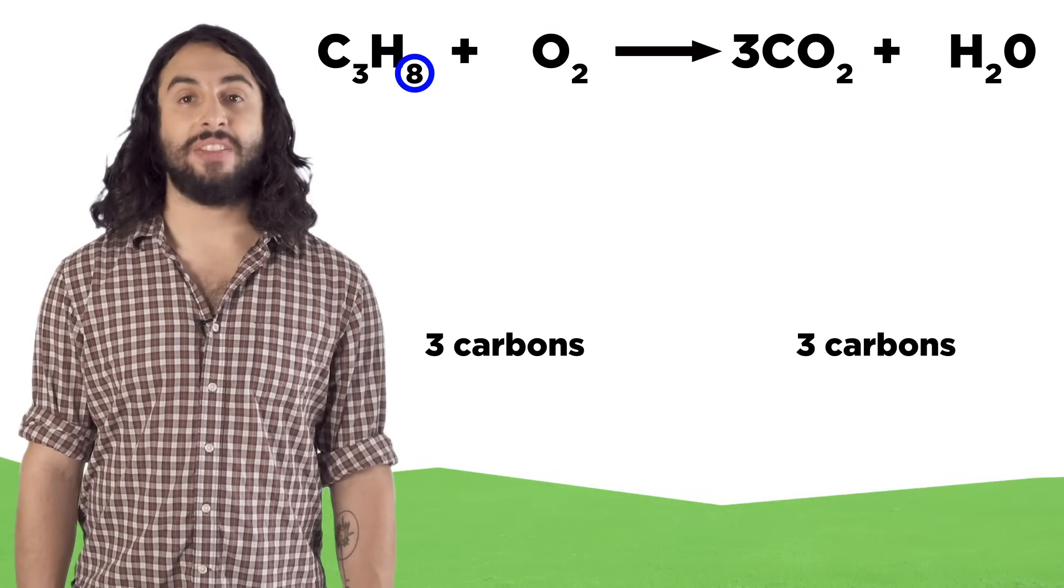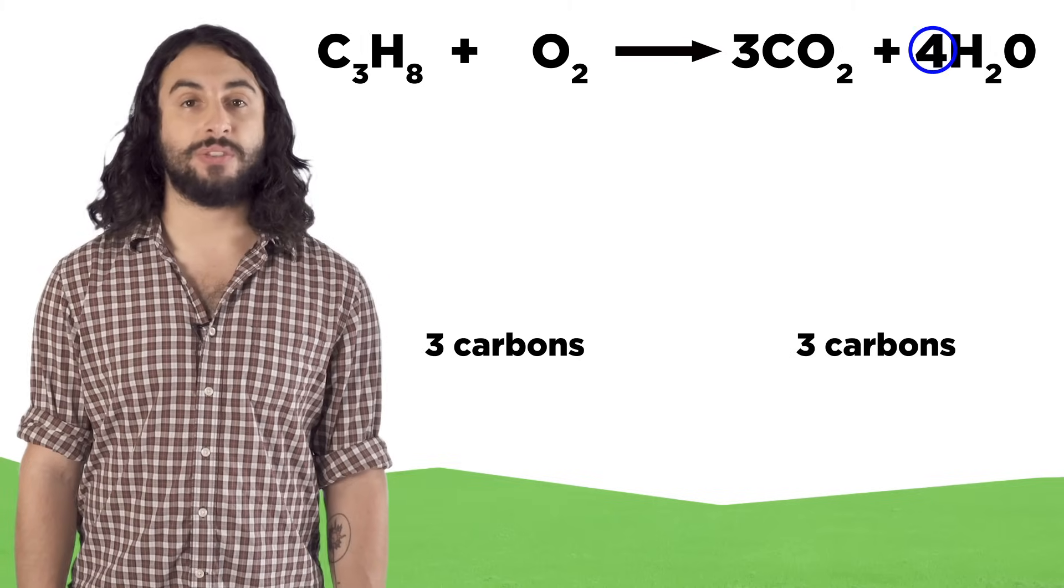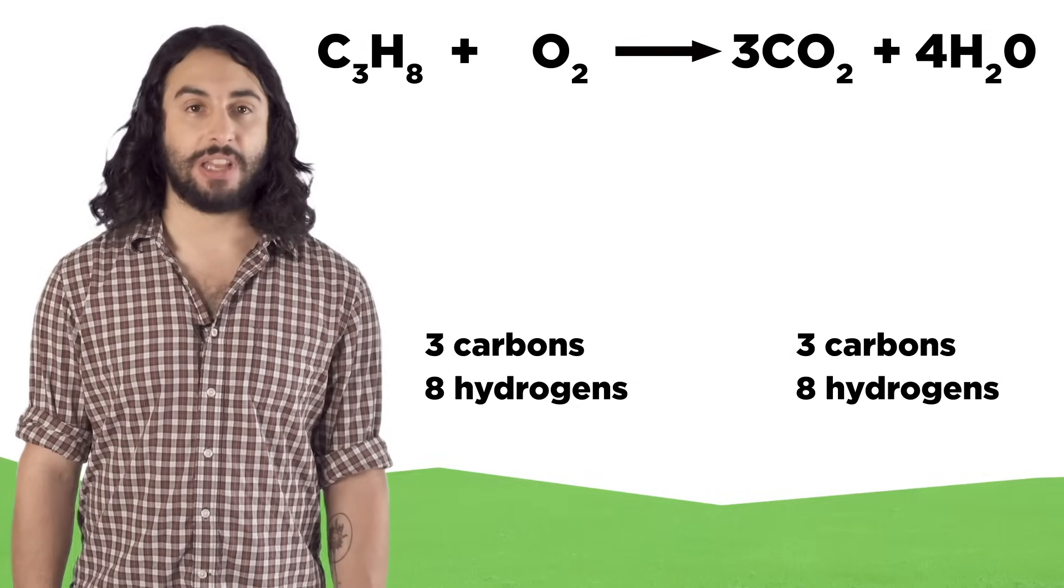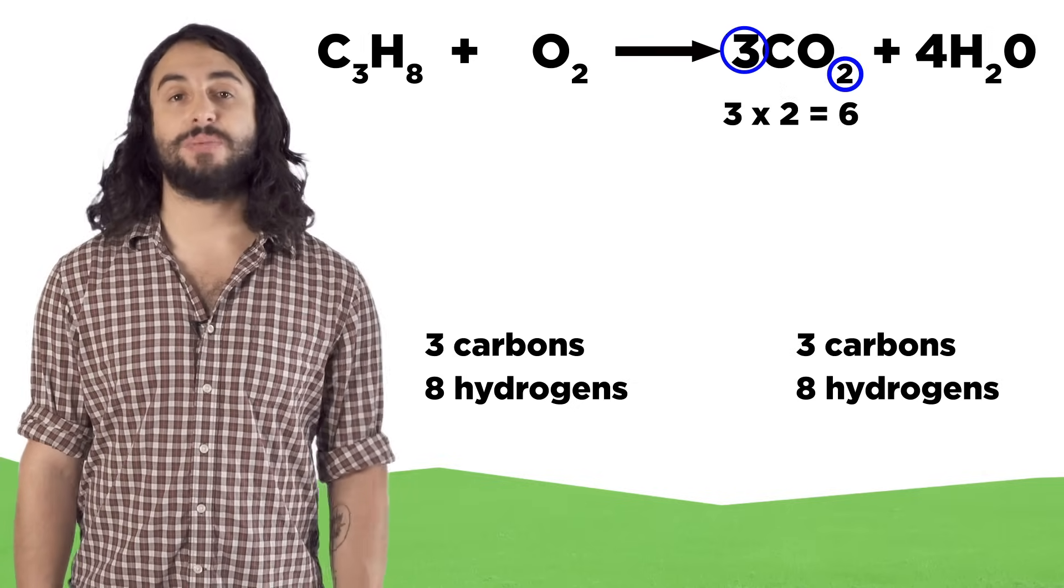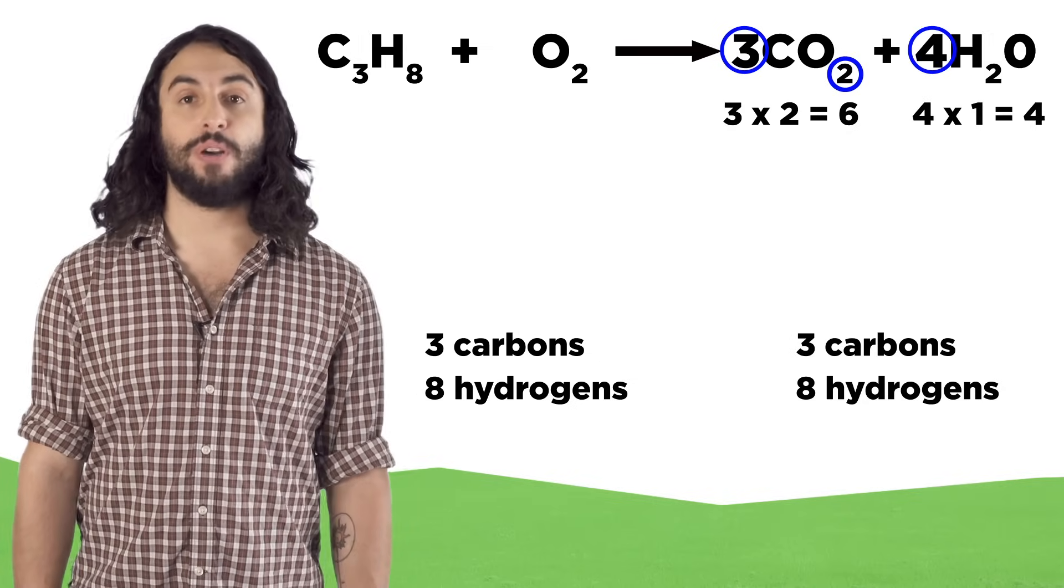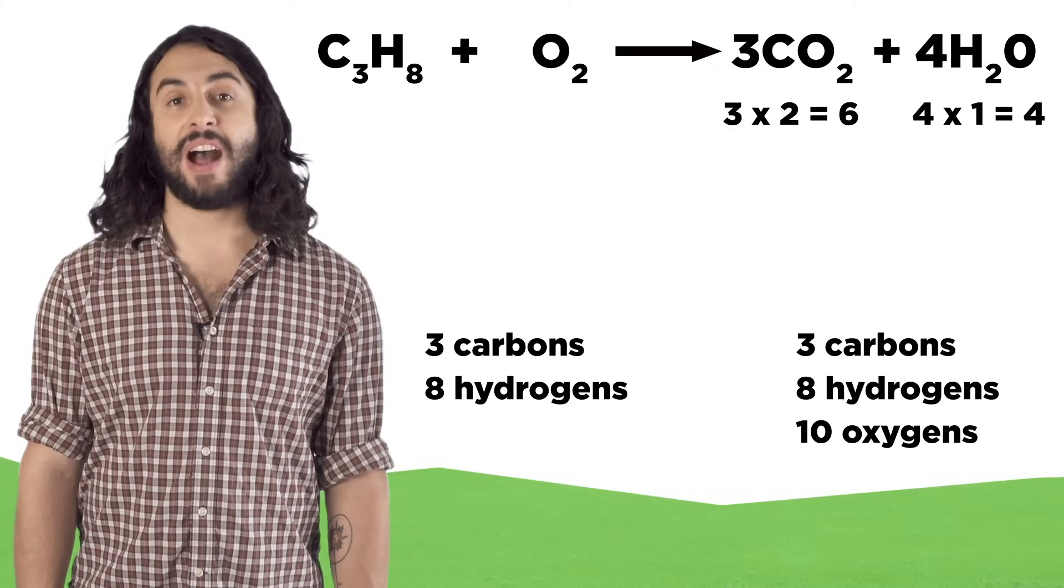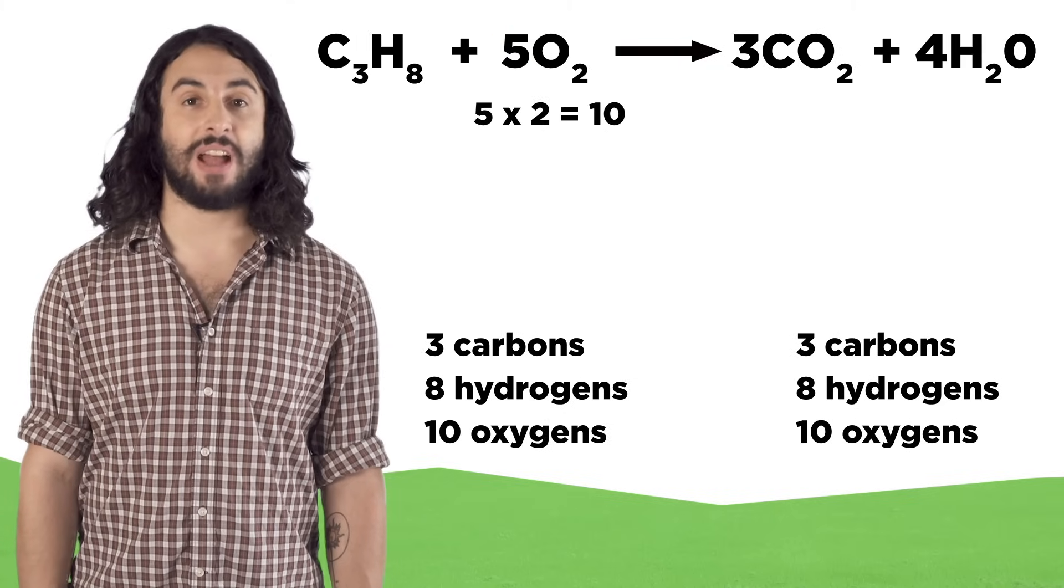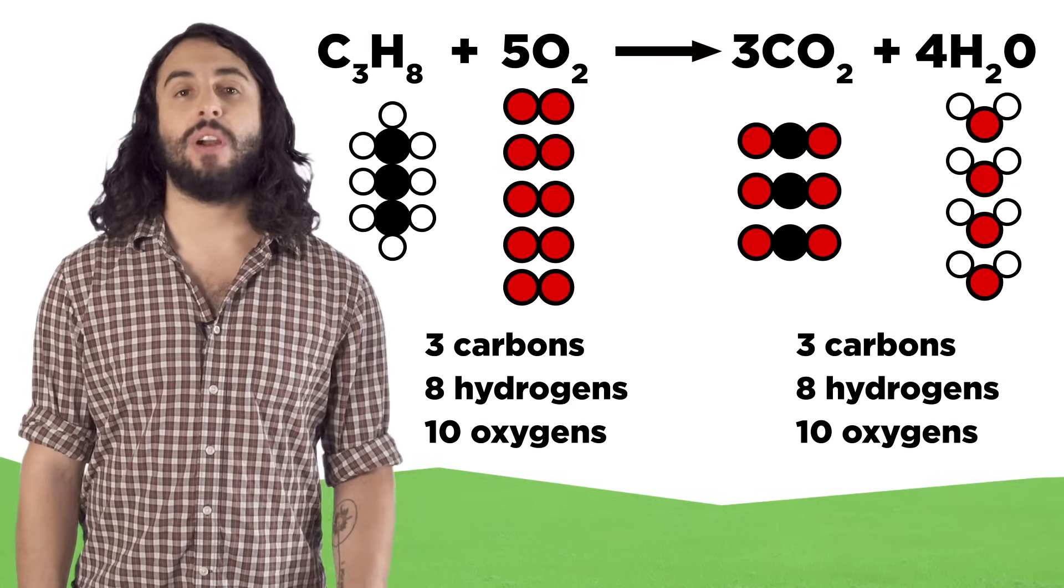Next let's do hydrogen. There's eight on the left and two on the right, that means we will make four waters with every propane. Now hydrogen is balanced, eight on each side. Last is oxygen. On the right there's six from CO2 and four from water for a total of ten. That means we will need five molecules of O2 to get ten oxygen atoms on the left side.